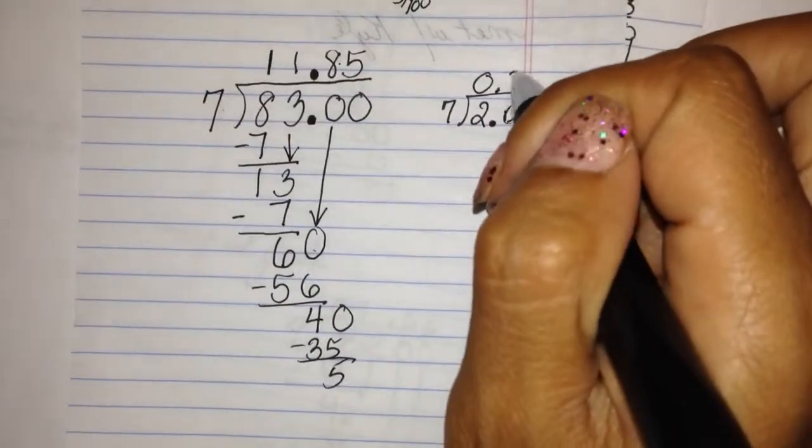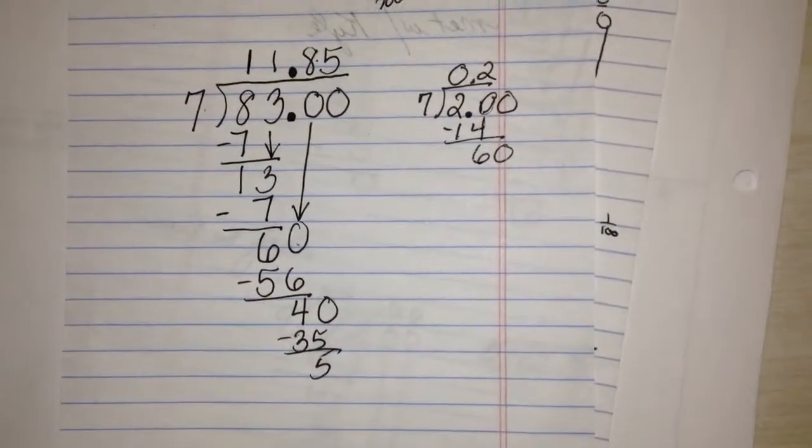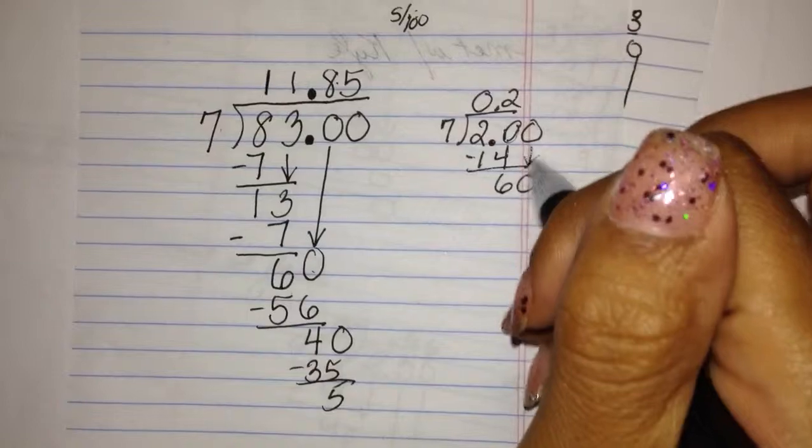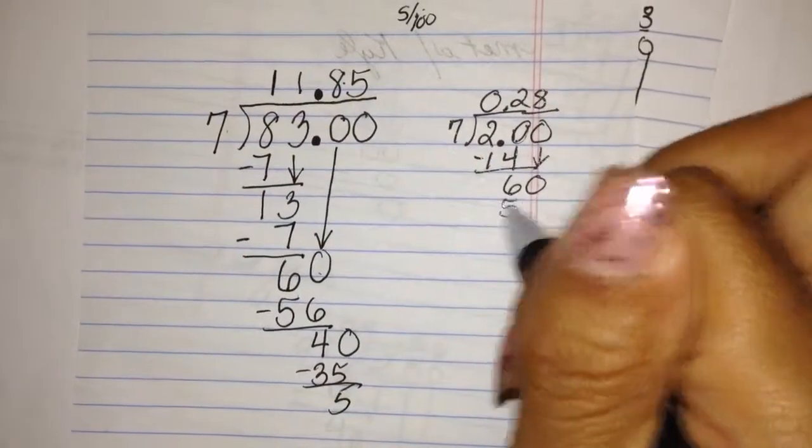7 goes into 20 two times. 6 bring down the zero. 7 goes into 60 eight times. 56.